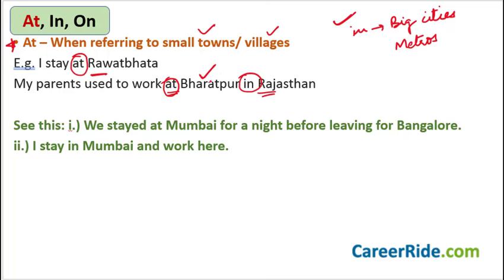But there are some exceptions here also. 'We stayed at Mumbai for a night before leaving for Bangalore.' Now Mumbai is a big city — it's a metro — yet I'm using 'at' because we were briefly there before moving on. So whenever you are staying in a metro or big city briefly before you move on, you use 'at.' But 'I stay in Mumbai and work here' — I'm not moving anywhere, I'm here for a long time. So 'in Mumbai.'